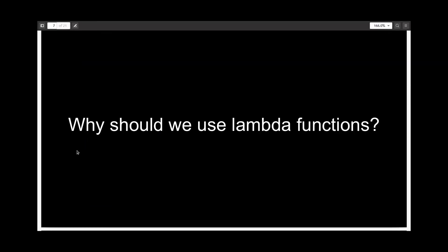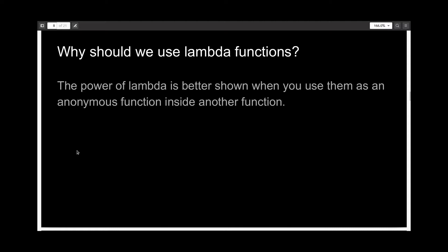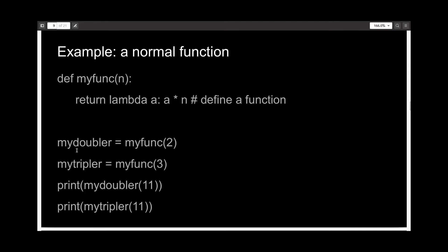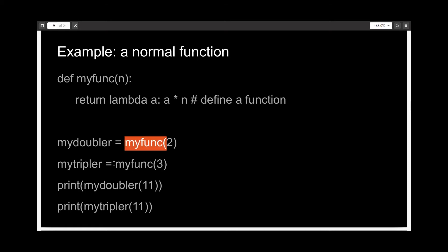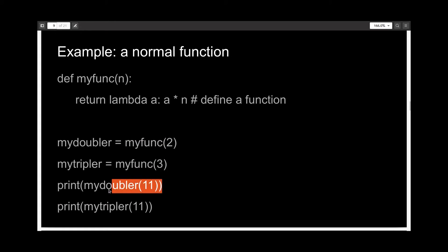So why should we use Lambda functions? It looks needlessly complex. The power of Lambda functions is better shown when you use them as anonymous functions inside another function. So let's say you have a function myfunc with a Lambda expression inside it, and this just multiplies the argument of the function with the argument of the Lambda expression. Now if you have two variables, mydoubler and mytripler, and you give them values of myfunc(2) and myfunc(3), then you can call print mydoubler(11) and print mytripler(11). The first print statement will double the value of 11, and the second will triple the value of 11.